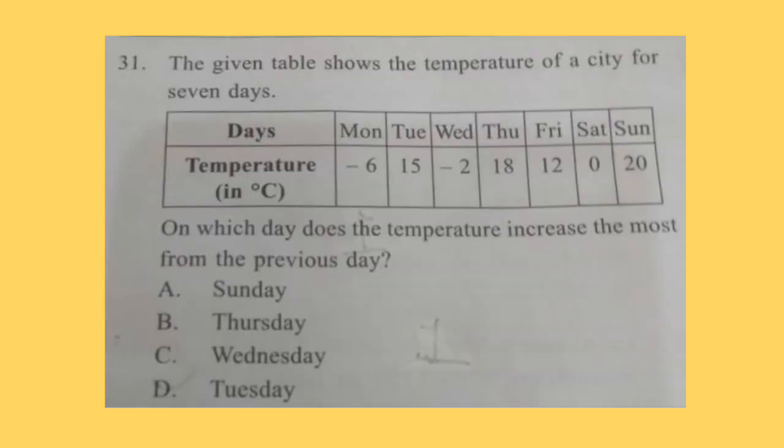Question 31: The given table shows the temperature of a city for 7 days. Look at the table. Monday to Sunday, each day's temperature is given. Question: On which day does the temperature increase the most from the previous day? You have to find out the difference of each two days, and then the number which is largest will be the answer. That is, on which day the temperature increase the most from the previous day. So correct answer is option D, Tuesday. Minus 6 minus minus 15 will give you minus 21, which will be the largest. And so Tuesday, D is the correct answer.